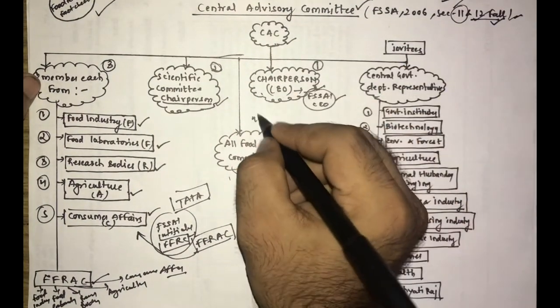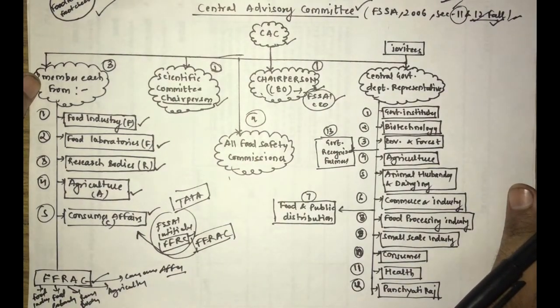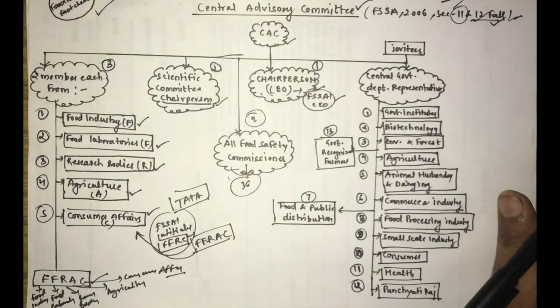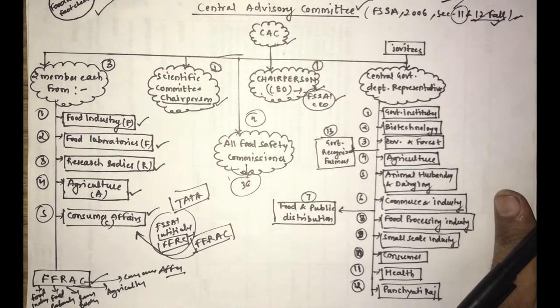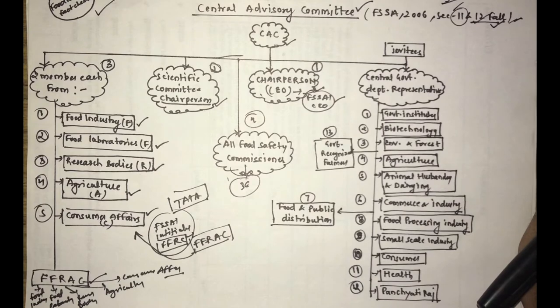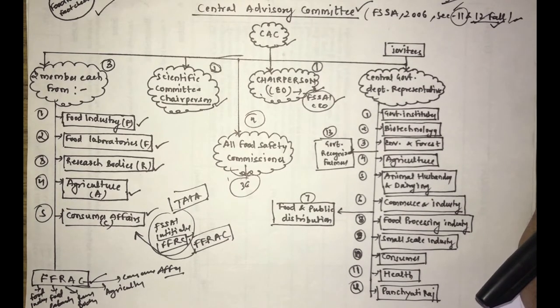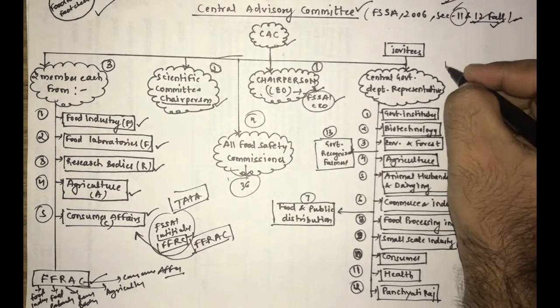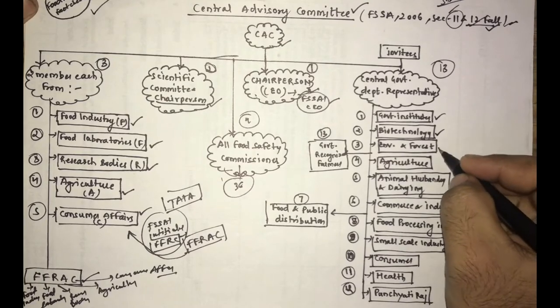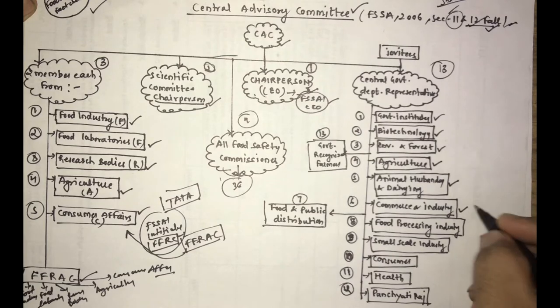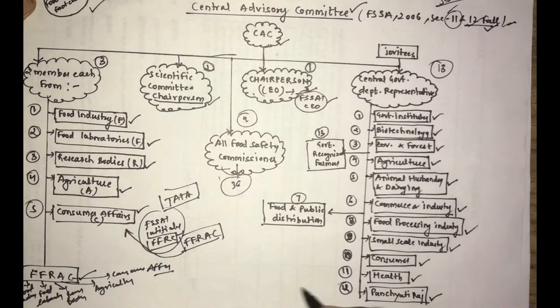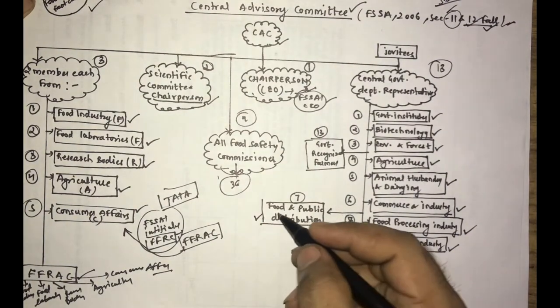Now, the fourth member is the Food Safety Commissioners. Currently there are 36 members, means 36 food safety commissioners as per the FSSAI from government departments and ministries. So the first one is government institutes, the second is biotechnology, the third is environment and forest, the fourth is agriculture, the fifth is commerce industry, the seventh is food processing industry, the eighth is small scale industry, the ninth is consumer, the tenth is health, the eleventh is panchayati raj, the twelfth is food and public distribution, and thirteen is government recognized farmer.